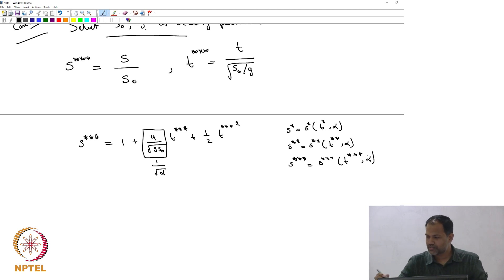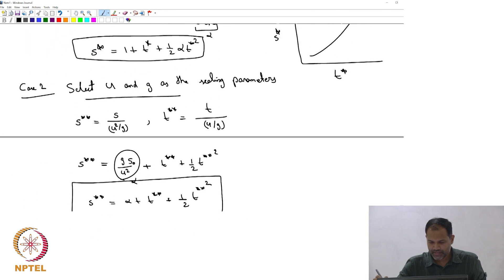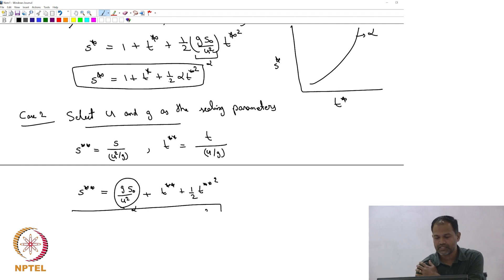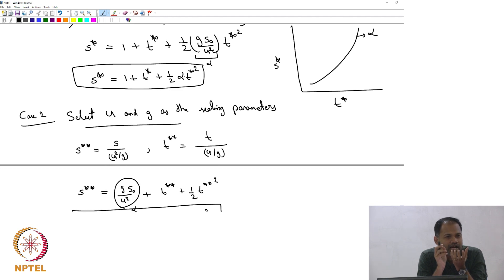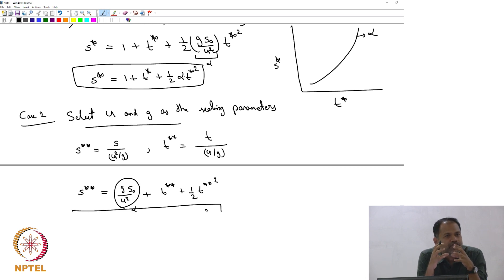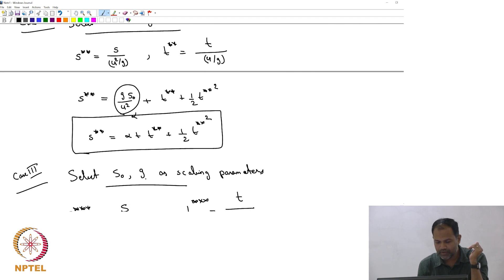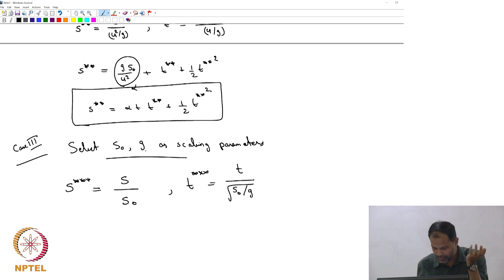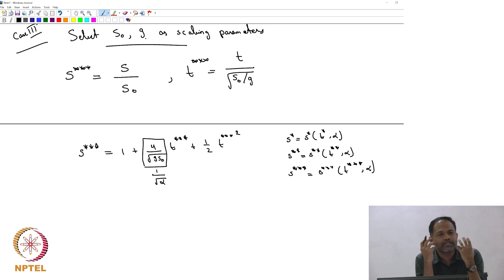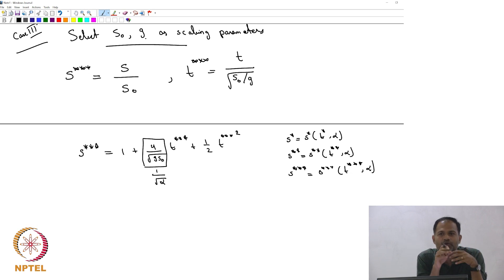In Case 1, α appeared in the place of gravity — so changing α is like changing your gravitational constant. In Case 2, α came out at the place of the initial displacement S₀. In Case 3, it came out as the initial velocity U. So you can interpret that non-dimensional parameter in any fashion you like, because α always contains g, S₀, and U and can be interpreted in multiple ways — that is the nature of a non-dimensional quantity.